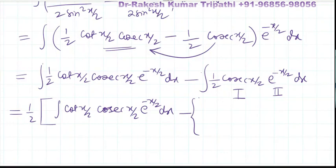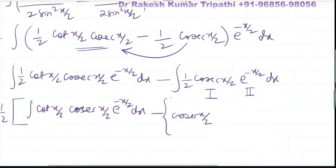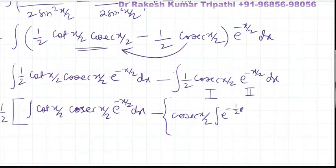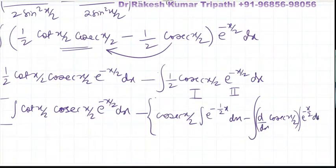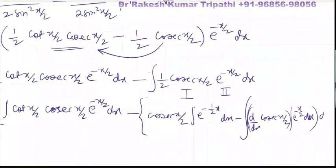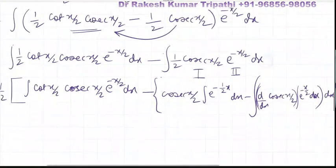Since cosec(x/2) is the first function, using the integration by parts result: cosec(x/2) × integral of e^(-x/2) — which equals e^(-(1/2)x) — minus the integral of [derivative of cosec(x/2) × integral of e^(-x/2)] dx, with the extra dx included.